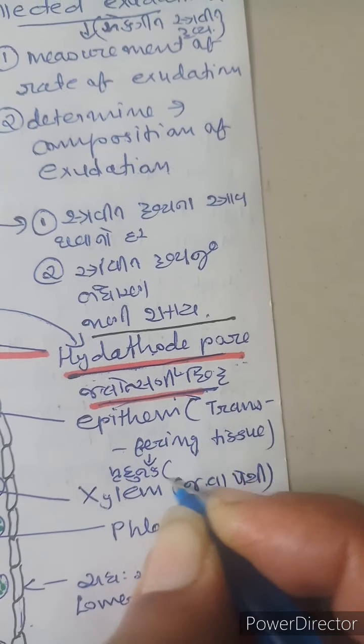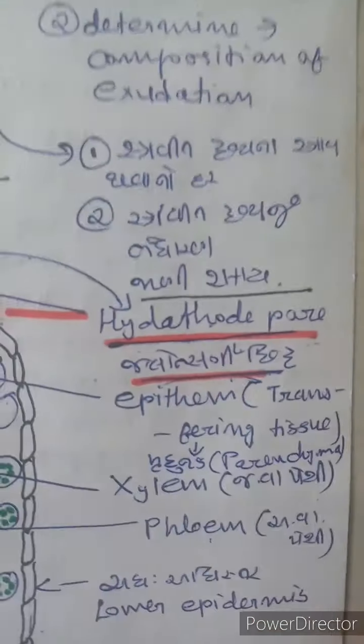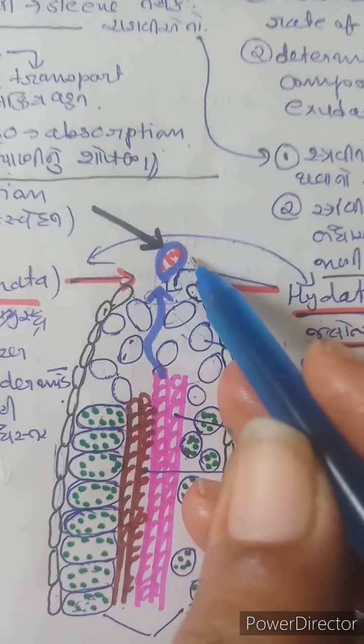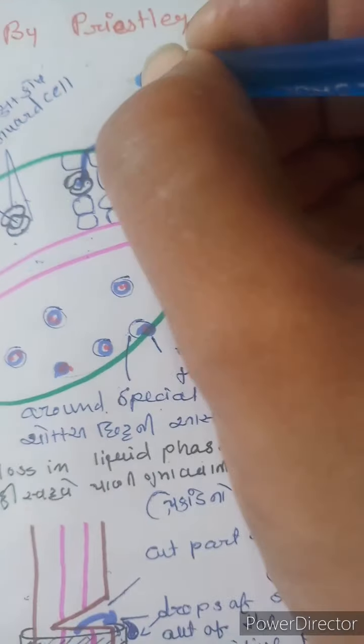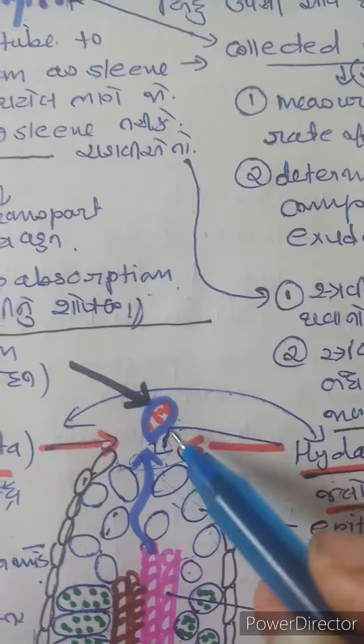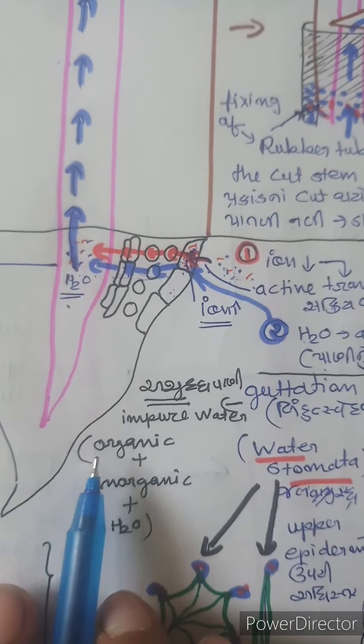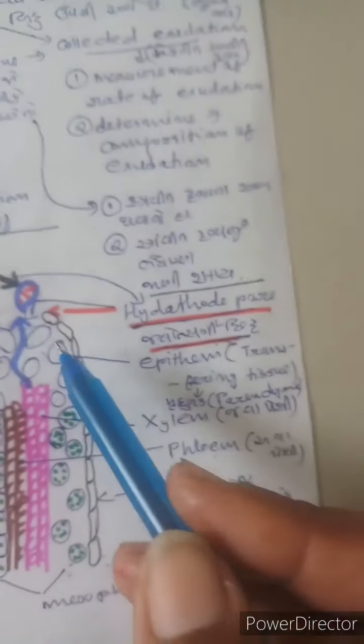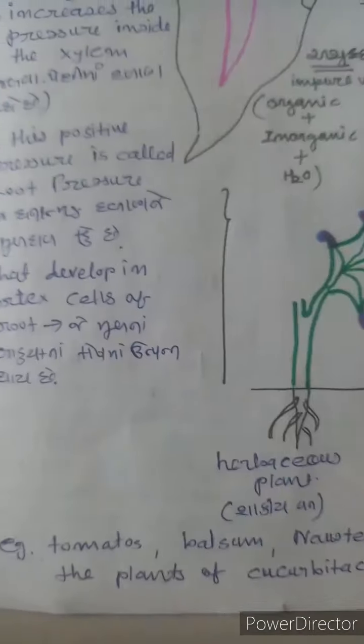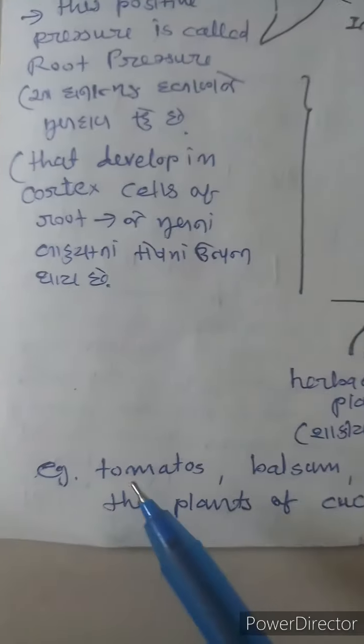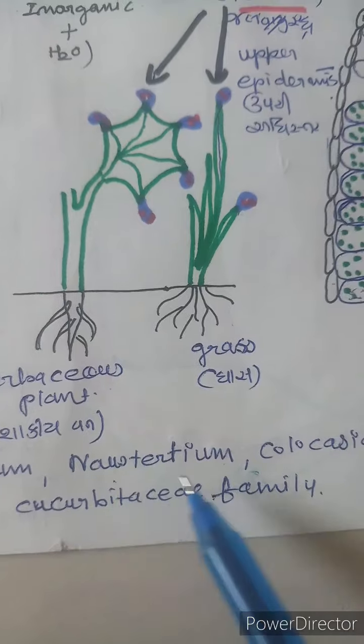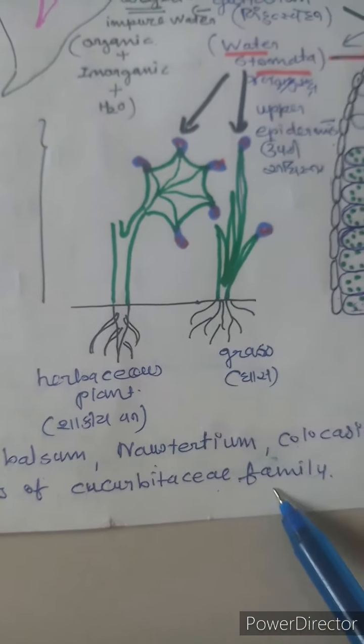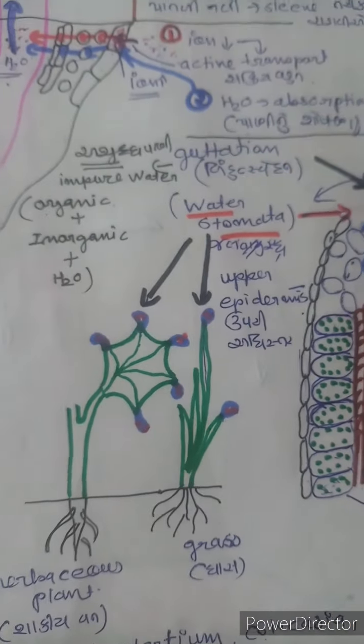The epithem is a transfer tissue. Water droplets appear around these special openings at the tip and margins of grass blades and leaves of many herbaceous plants. Examples include tomato, balsam, nasturtium, colocasia, saxifraga, and some plants of the Cucurbitaceae family.